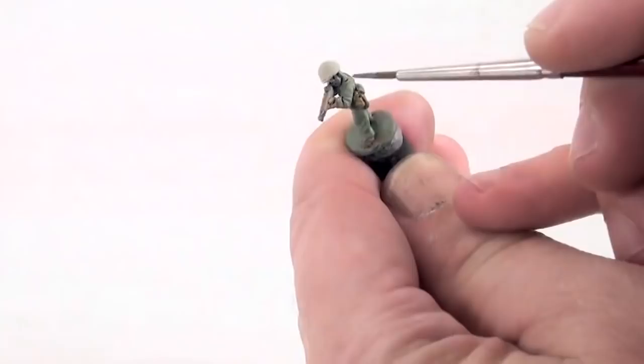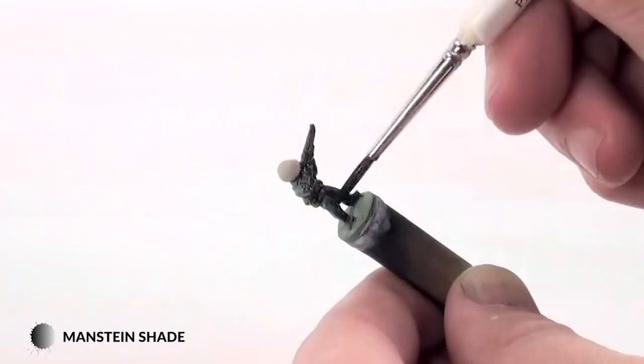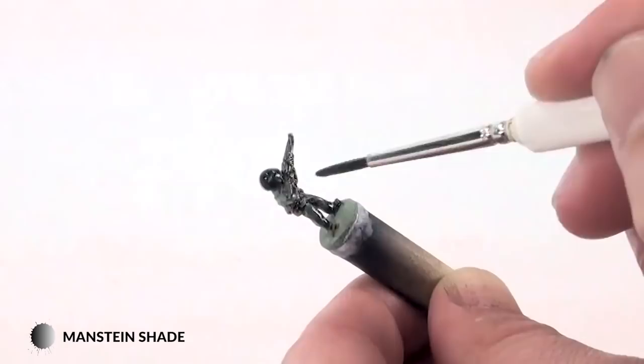The next thing I do is thin down some Manstein shade, and then I'll liberally apply this over the whole model. The reason I do this is to add a bit of shadow, a bit of depth to the colors. What you'll find when you do this is it will darken all of the colors that you painted on.